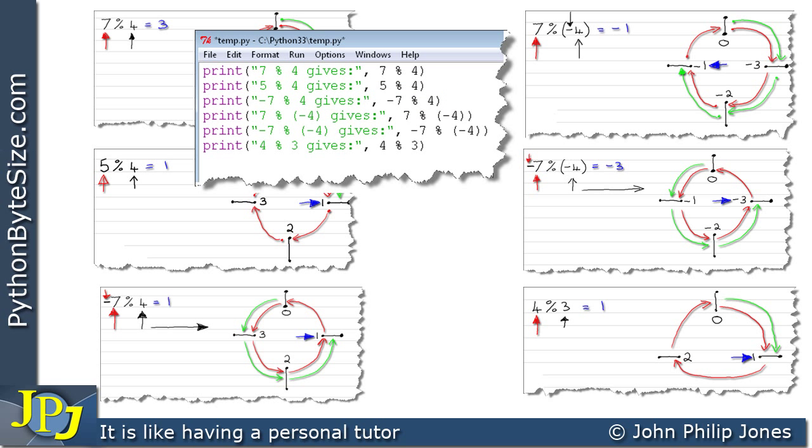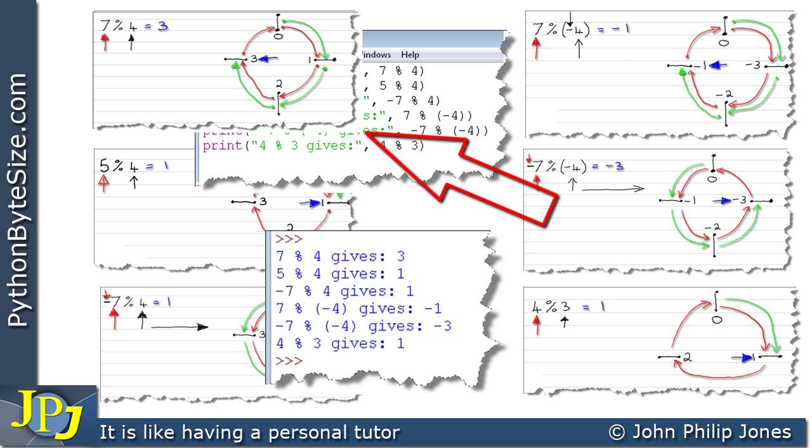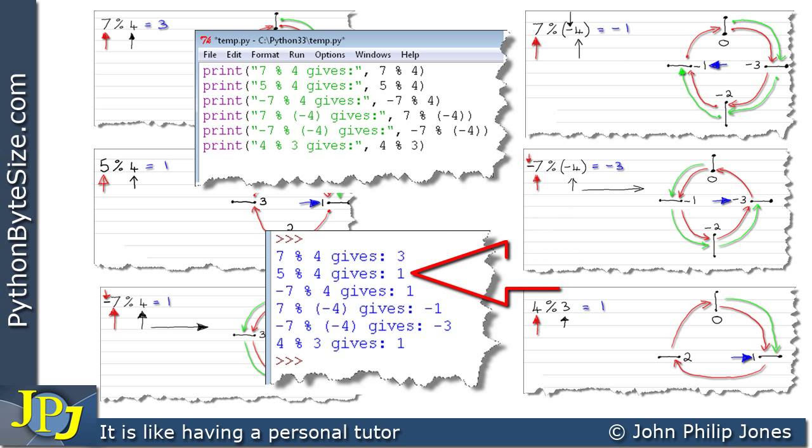Well here's the runtime here. So let's go through each one in turn. 7 modulus 4 gives 3. That's what I worked out up here, as you can see. 5 modulus 4 gives 1. That's what I worked out here.